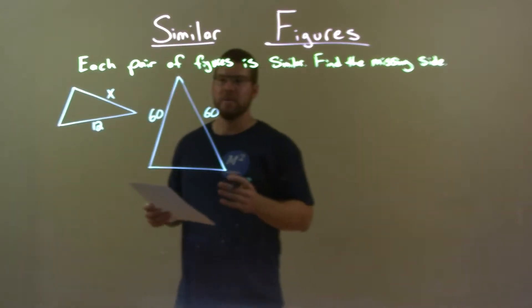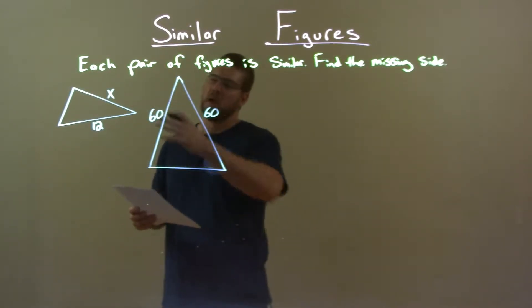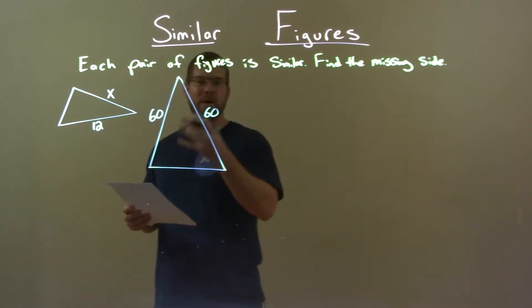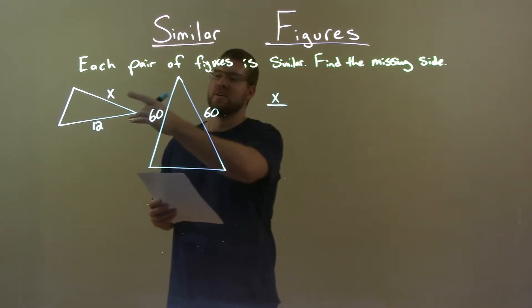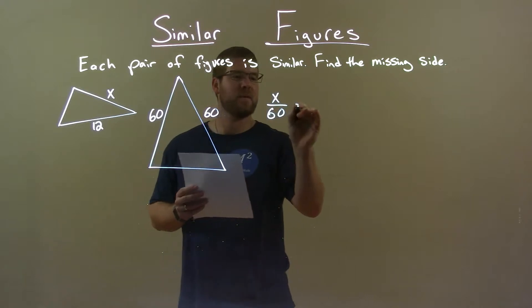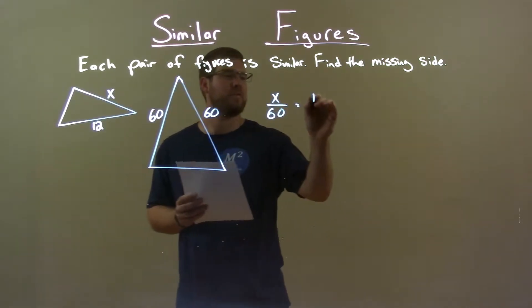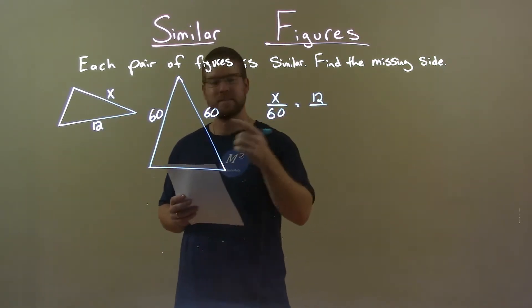So, what we want to do is, since they're similar, we can pair up and make a proportion with its corresponding side lengths. So, X matches up with 60, and 12 matches up with the other 60.